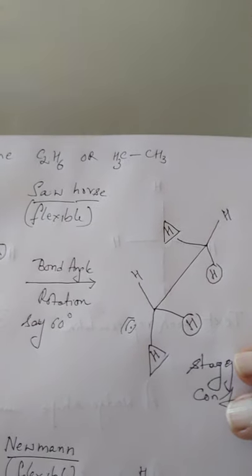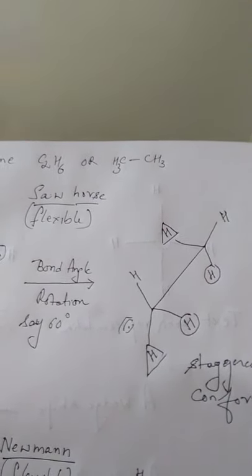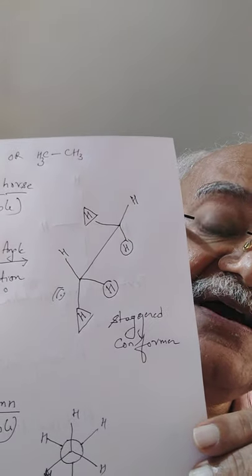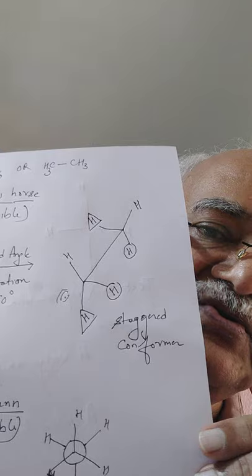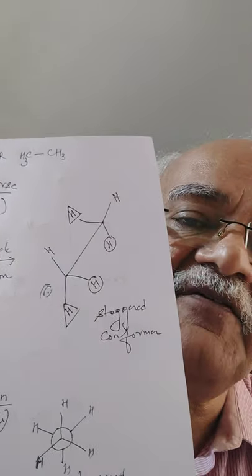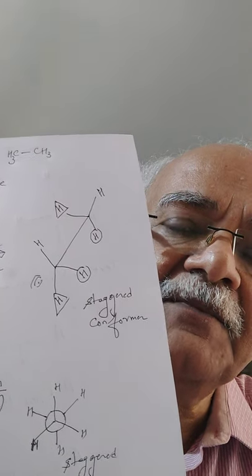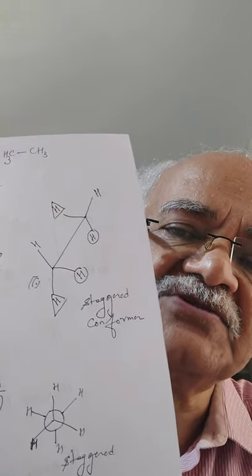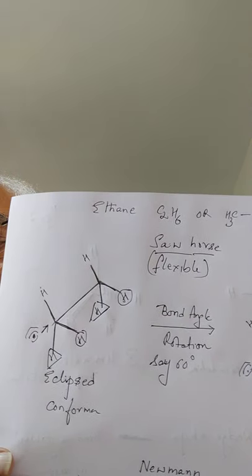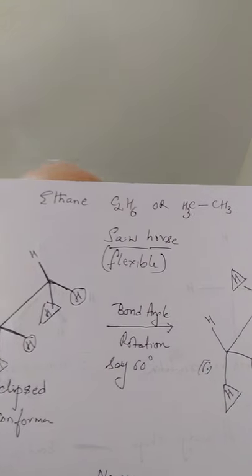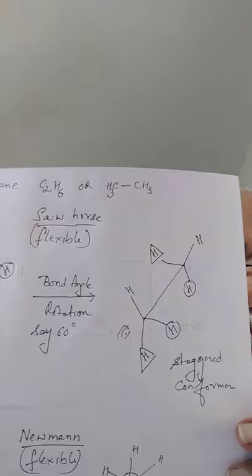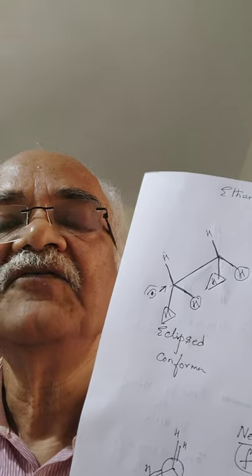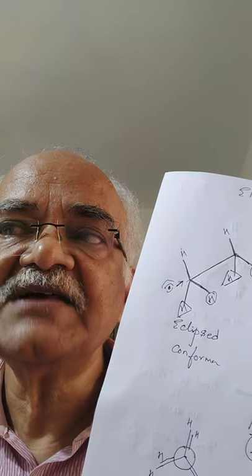If I rotate the bond by about 60 degrees, I can see all six hydrogens. This is called the non-eclipsed or staggered form. There may be many other forms depending on the number of carbons. Conformers are always between adjacent carbon atoms. So for ethane: one rotation by 60 degrees moves to staggered form; another 60 degrees moves back to eclipsed — a continuous process. This representation viewed from a slant angle is called the saw horse formula.